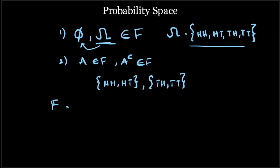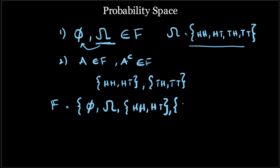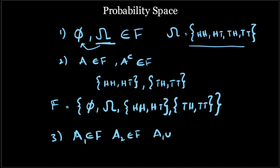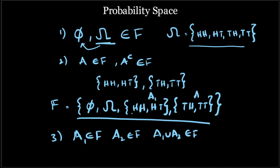The sigma algebra describing the first coin toss information can be defined as: the null set, omega, {HH, HT}, and {TH, TT}. The third condition is: if event A1 belongs to the sigma algebra and event A2 also belongs to the sigma algebra, then A1 union A2 should also belong to the sigma algebra. For example, if {HH, HT} is A1 and {TH, TT} is A2, then their union is omega, which also belongs to the sigma algebra.